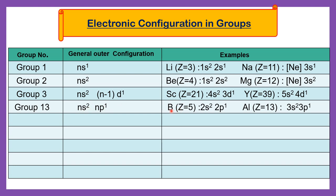Group number 13 has general outer electronic configuration ns2 np1 — p subshell containing 1 electron and s subshell containing 2 electrons. For example, boron (atomic number 5) has electronic configuration 2s2 2p1 — s subshell having 2 electrons, p subshell having 1 electron. Aluminum has 3s2 3p1 — same pattern, only the shell number differs: shell 2 for boron, shell 3 for aluminum.